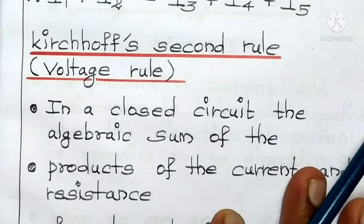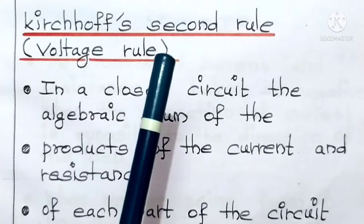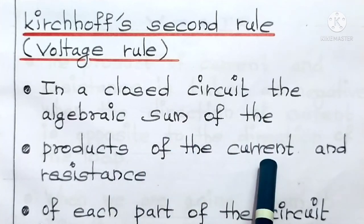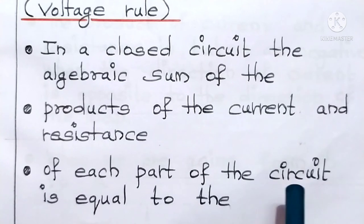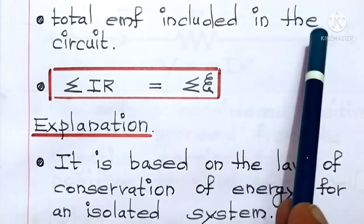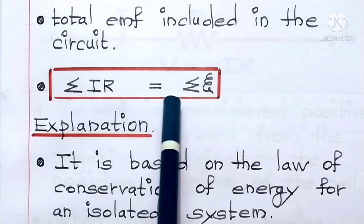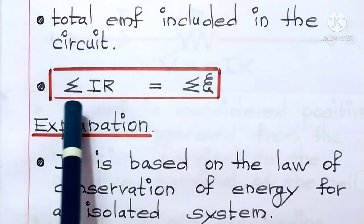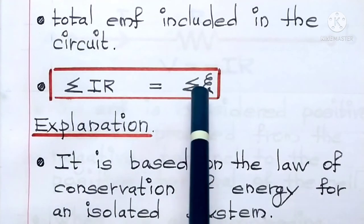Now let us learn Kirchhoff's second rule. It says that in a closed circuit, the algebraic sum of the products of the current and resistance of each part of the circuit is equal to the total EMF included in the circuit. In other words, Sigma IR is equal to Sigma eta. Sigma IR stands for summation of the products of current and resistance, and Sigma eta stands for summation of all the EMFs in the circuit.